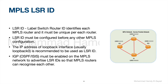Each MPLS router is known as LSR, or label switch router. It must have an ID. This ID identifies itself on the MPLS network, and this ID must be unique for each router on the MPLS network. The LSR ID must be configured before any other MPLS configurations are added on the router. Usually, we configure the loopback 0 interface on the router with an IP address, and this IP address will be the LSR ID.